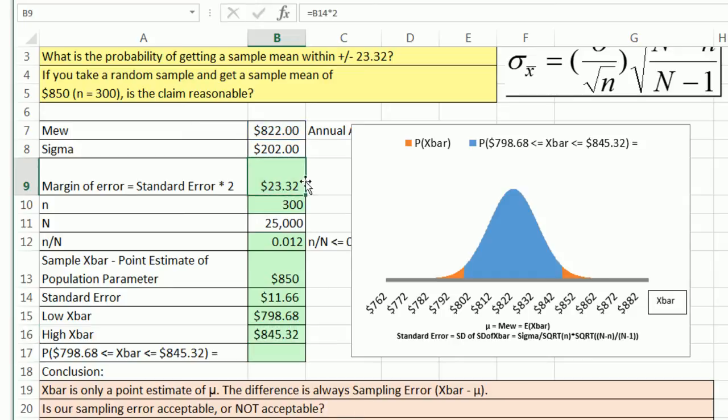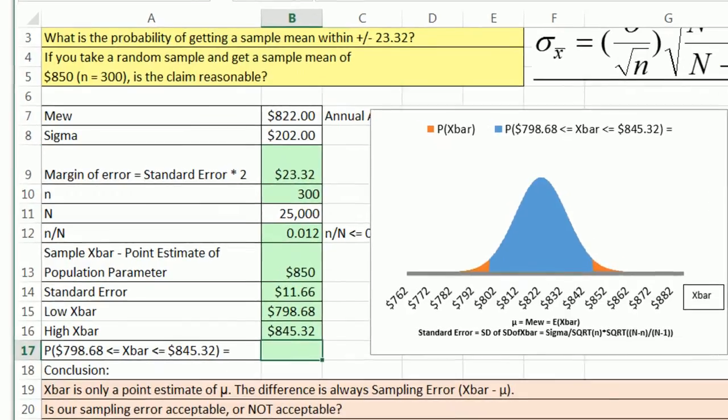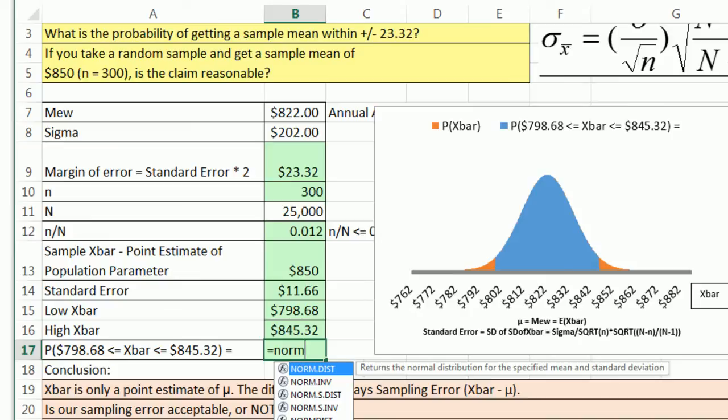Now we should be able to already guess what the probability is. Because remember, z is number of standard deviations. And so many of the calculations we've done so far in this class are all about how many standard deviations. And two standard deviations is about 95%. But let's go ahead and do our formula.